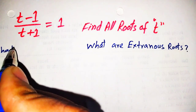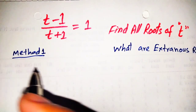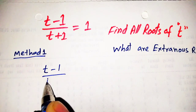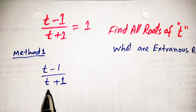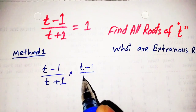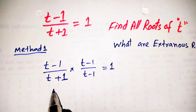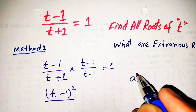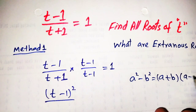In Method 1 we will rationalize the given expression. As you know, in rationalization we multiply and divide by a new denominator term by changing the sign. In the denominator we have t plus 1, so for rationalization we multiply and divide by t minus 1. These two after multiplication will use the famous formula: a squared minus b squared equals a plus b times a minus b.